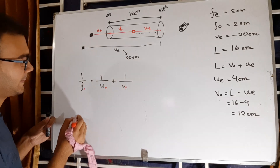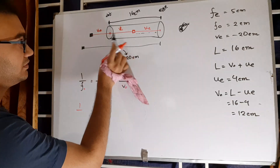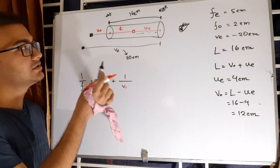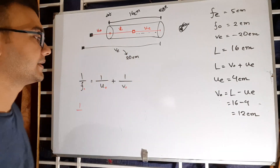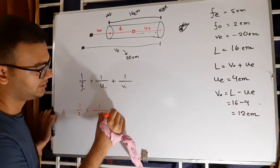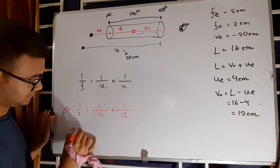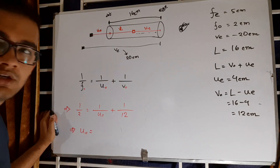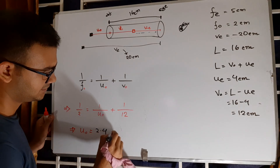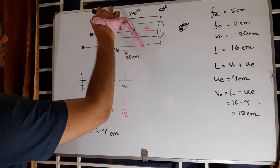Now applying the formula for the object piece: V_O is positive because the object and image are on different sides of the lens. F_O = 2 centimeters, V_O = 12 centimeters. Solving for U_O using 1/F_O = 1/U_O + 1/V_O, I get U_O = 2.4 centimeters. So the distance of the object from the object piece is 2.4 centimeters.